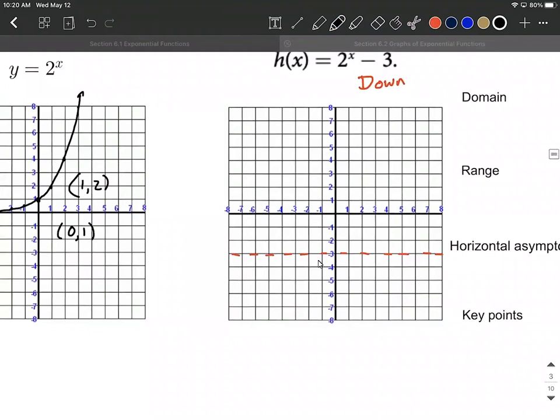All right, from 0, 1, that point got picked up and moved down 1, 2, 3 units. So I believe we're at 0, negative 2. I'm just kind of writing that off to the side. And then when we're at 1, 2, that gets moved down 1, 2, 3 units. So we're going to be at 1, negative 1.